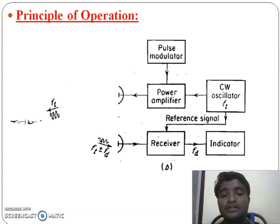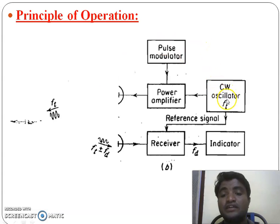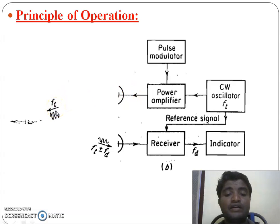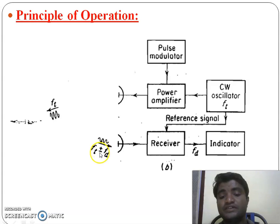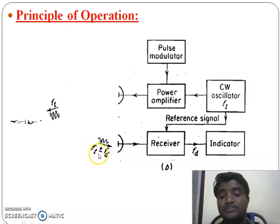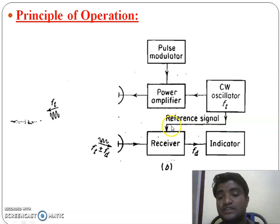Looking at the basic operation of the MTI radar: a continuous wave oscillator generates a CW signal, which is turned on and off by using a pulse modulator. The transmitted signal frequency is FT, and the received echo signal frequency is FT plus or minus FD, because the target is in a moving condition, causing a change in frequency. In the receiver we have a mixer, which requires two inputs: one is the reference signal and another is the echo signal.